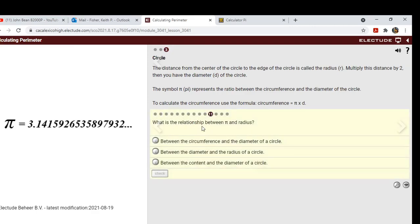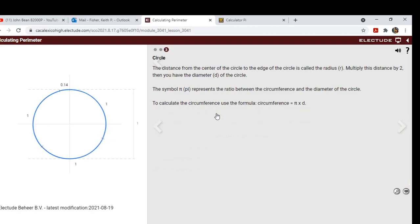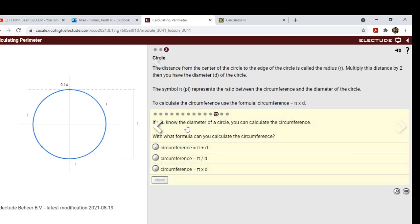What is the relationship between pi and radius? Between the circumference and the diameter of the circle. All right, if you know the diameter of a circle you can calculate the circumference. Which formula can you calculate the circumference? Well, circumference equals pi times diameter.